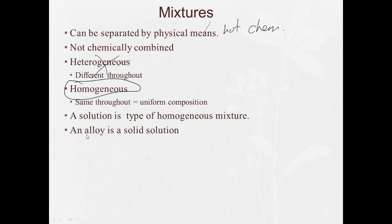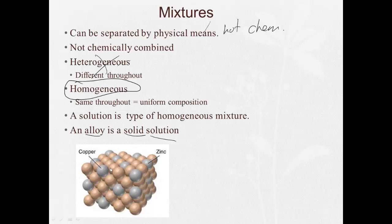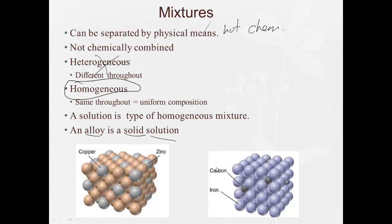And definition, an alloy is a solid solution, usually mixed metal. So here's an alloy of copper and zinc and carbon and iron. So this is an alloy called brass. This is an alloy carbon steel.